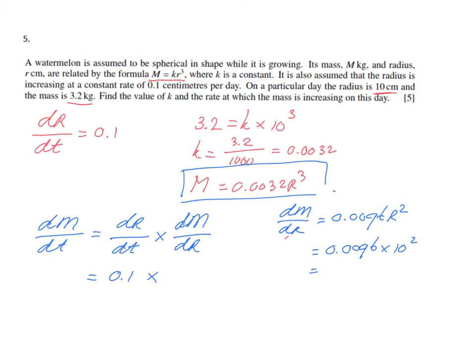So dm/dr when the radius is 10 centimeters is 0.96. I can put that inside this function now, so dm/dt is 0.1 times 0.96, which equals 0.096.